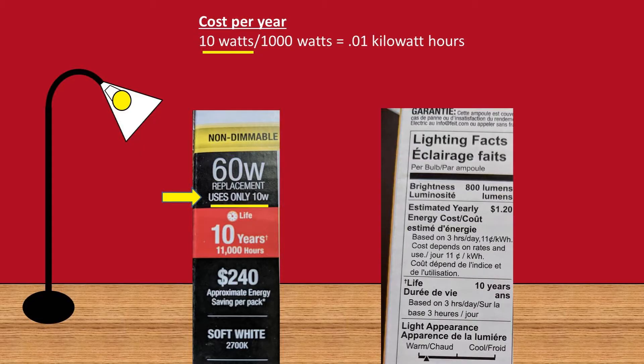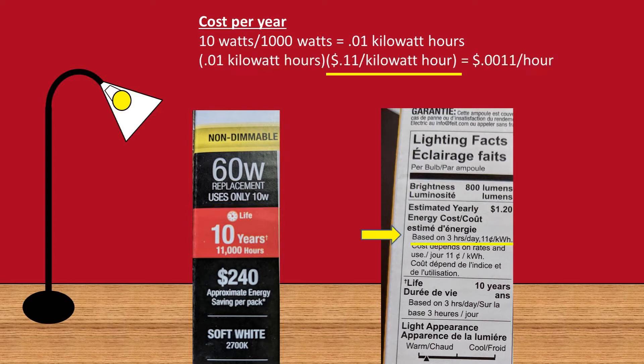First, let's calculate the energy cost per year. We have a 10 watt light bulb, which is a unit of power, and we want to convert to kilowatt hours, which is how power companies in the US charge customers. We can divide 10 watts by 1,000 watts to get 0.01 kilowatt hours. Now we can multiply this by 11 cents per kilowatt hour, which is the figure the box uses. We get 0.11 cents per hour needed to run this light bulb.